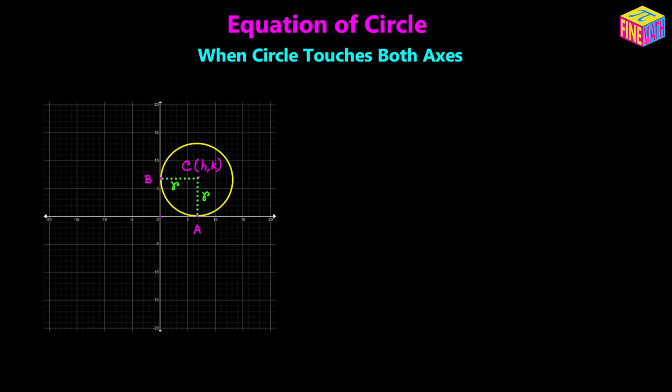Now, is this the only possibility? Well, if we are given the radius of a circle and told that the circle touches both the axes, then actually there are four possibilities. This is one of them — the circle being in the first quadrant. The circle could also be in the second quadrant, or in the third quadrant, or in the fourth quadrant. So if we are given the radius and told that the circle touches both axes, there are four possibilities. But if we are given the center of the circle, then we are talking about just one specific circle.